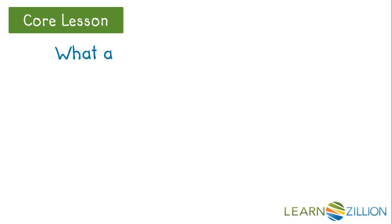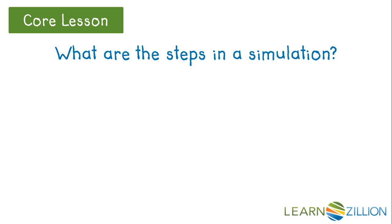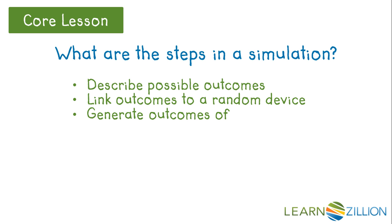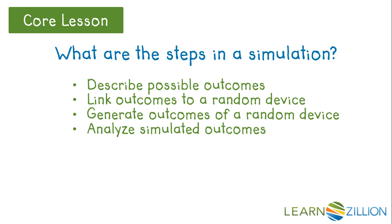What are the steps in a simulation? First you describe possible outcomes, then you link those outcomes to a random device such as using random numbers, then you generate outcomes of that random device, you analyze simulated outcomes, and then report results.